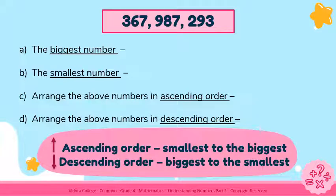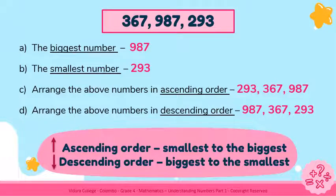In the pink color box you can see 3 numbers given. You have to find the biggest number, the smallest number, and arrange the given numbers in ascending order, then in descending order. Ascending order means smallest to biggest, and descending order means biggest to smallest. The biggest number is 987, the smallest number is 293. In ascending order: 293, 367, and lastly 987 — going from smallest to biggest. In descending order: 987, 367, lastly 293 — going from biggest to smallest.